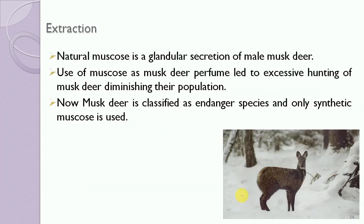Extraction of muscone: natural muscone is a granular secretion of male musk deer. These deer are caught mainly for musk. The use of muscone as a perfume ingredient led to the excessive hunting of the musk deer, which caused diminishing of their population. Now the musk deer is classified as an endangered species. Hence only synthetic muscone is used for various cosmetics and other purposes.